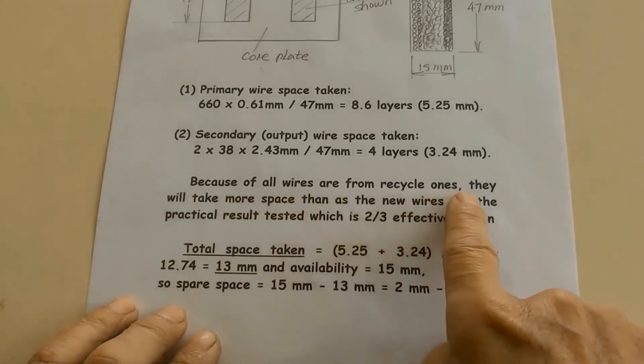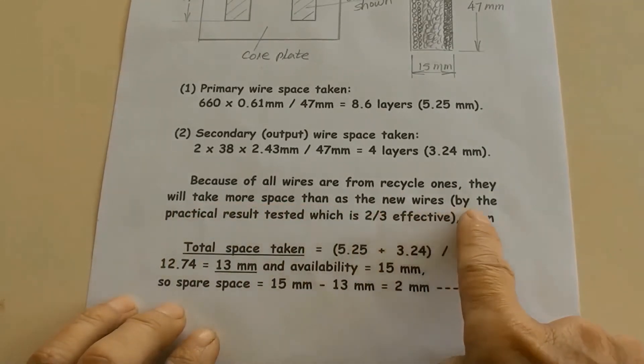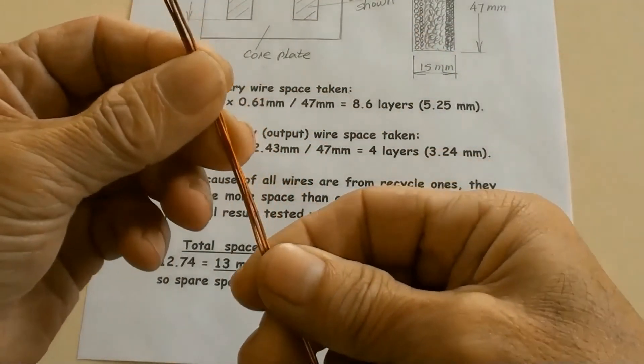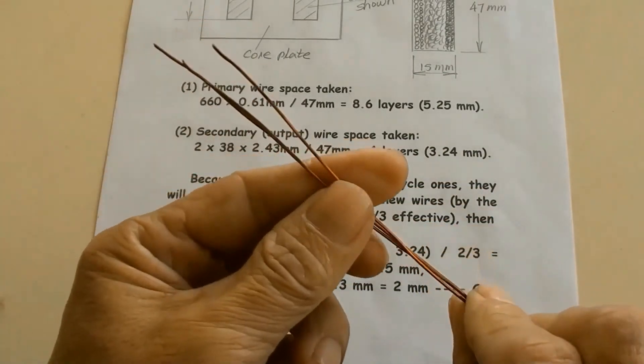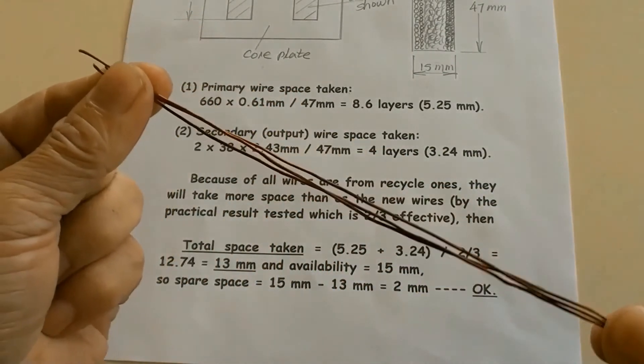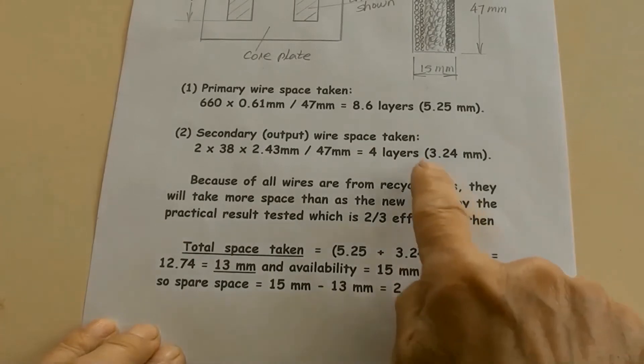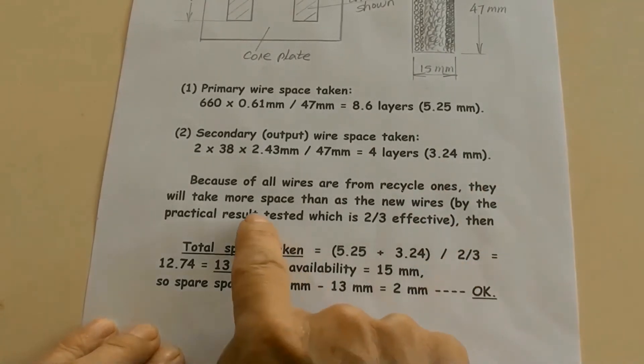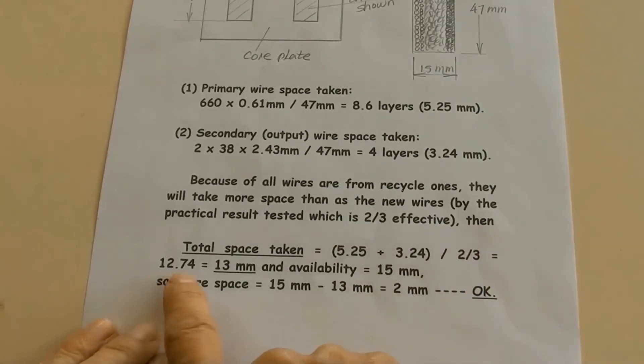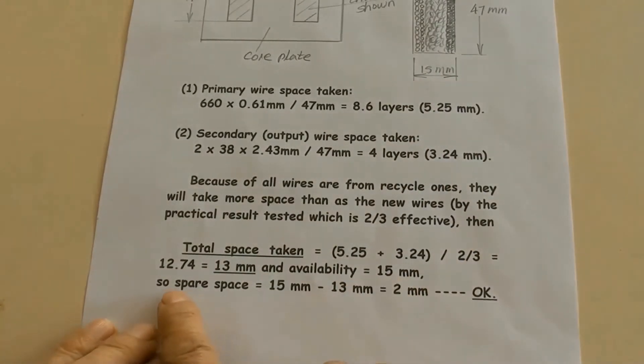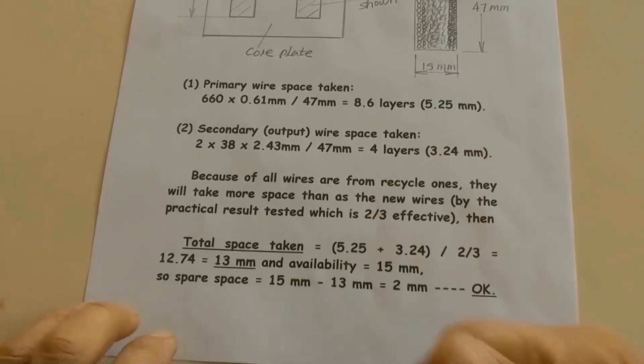Because all winding wires are from recycle ones, they will take more space than has the new wires. As example here, the very gaps are there between wires. By the practical result tested, which is 2 over 3 effective. Then total space taken equals 5.25 plus 3.24 over 2/3 equals 12.74 equals 13mm. And availability equals 15mm. So spare space equals 15mm subtract 13mm equals 2mm. It is all okay.